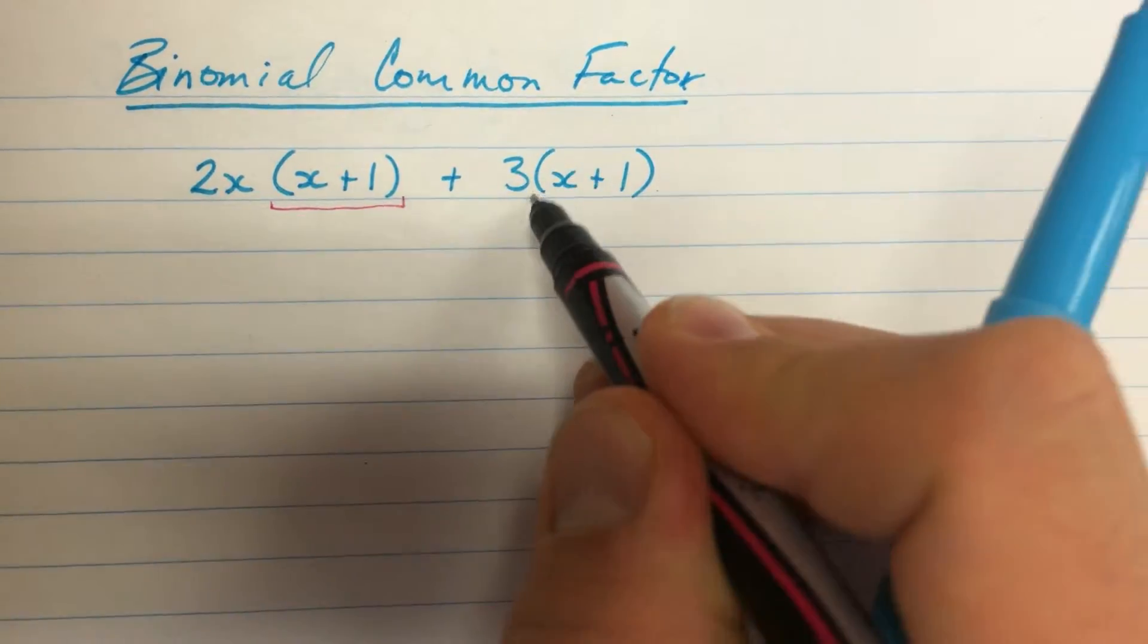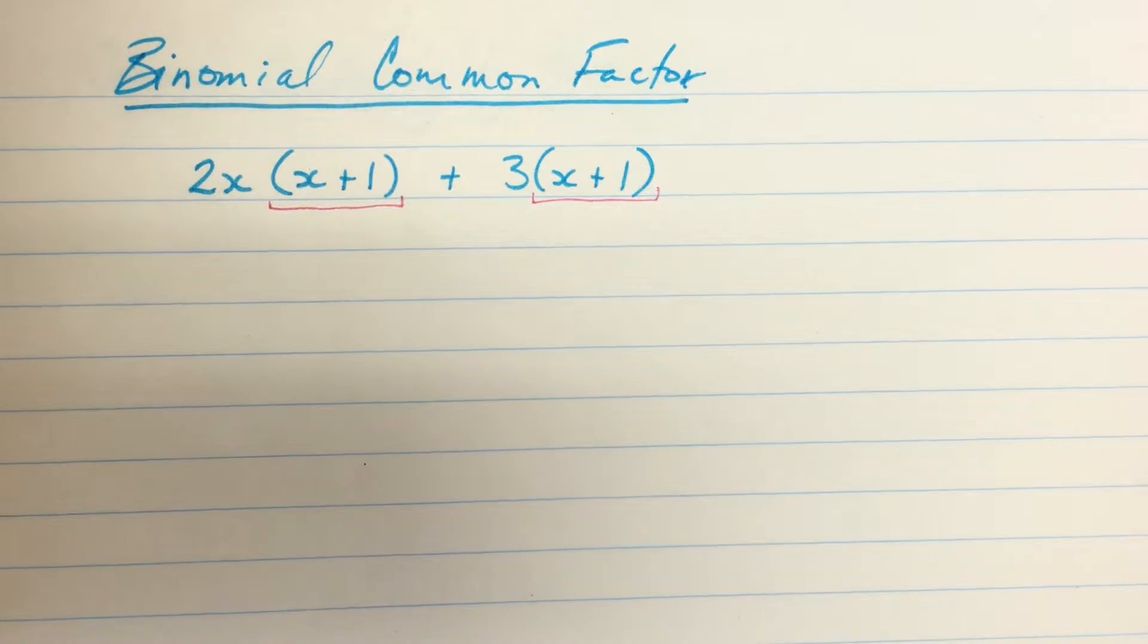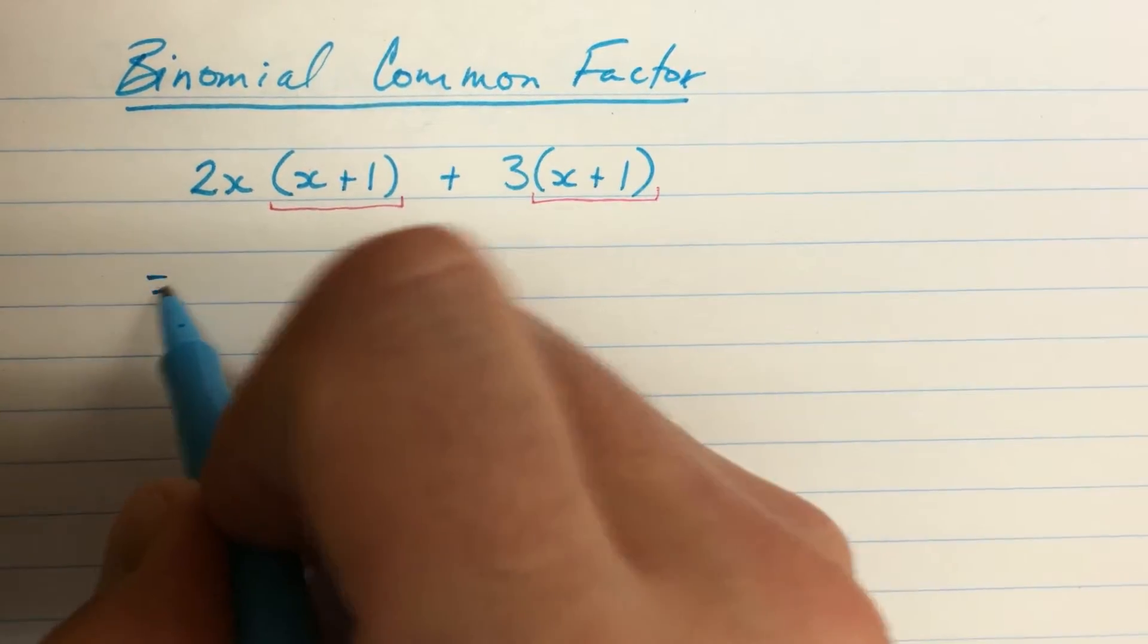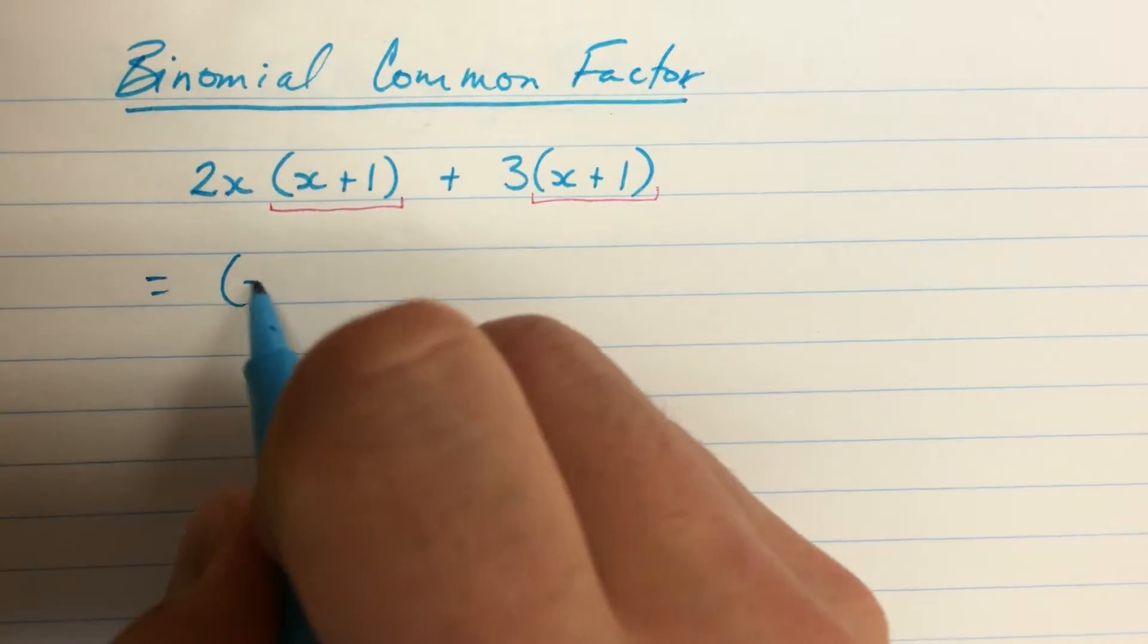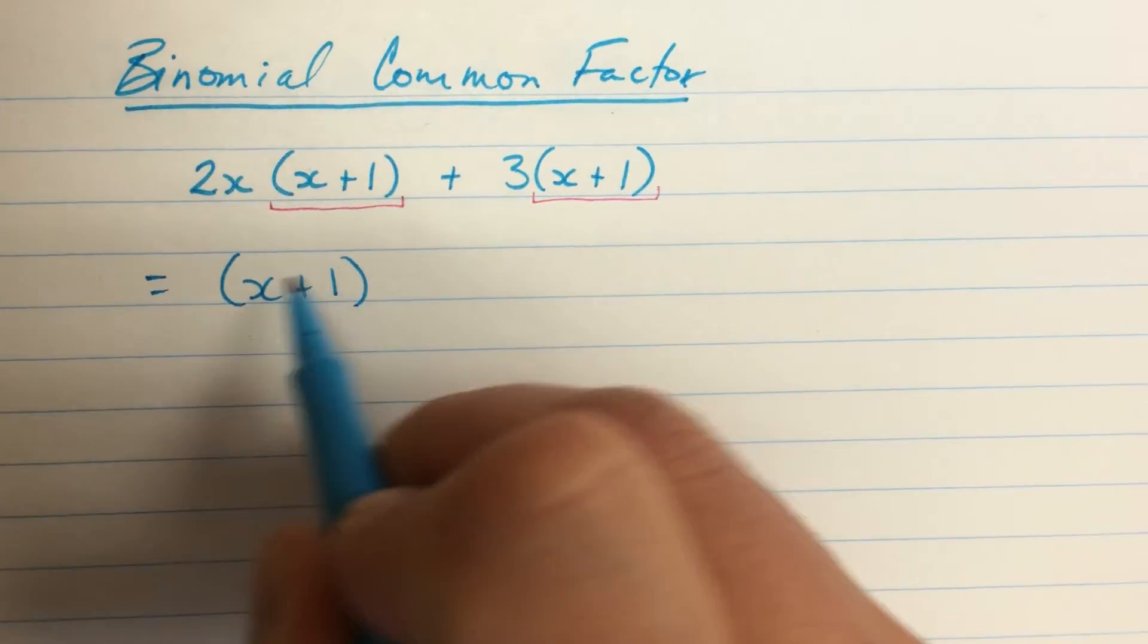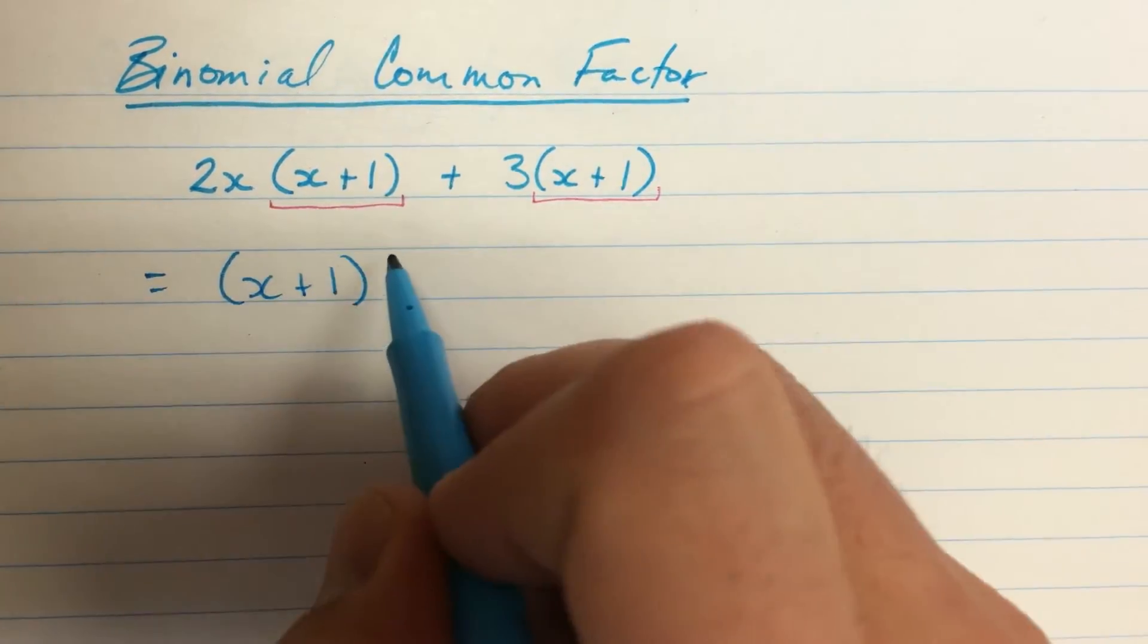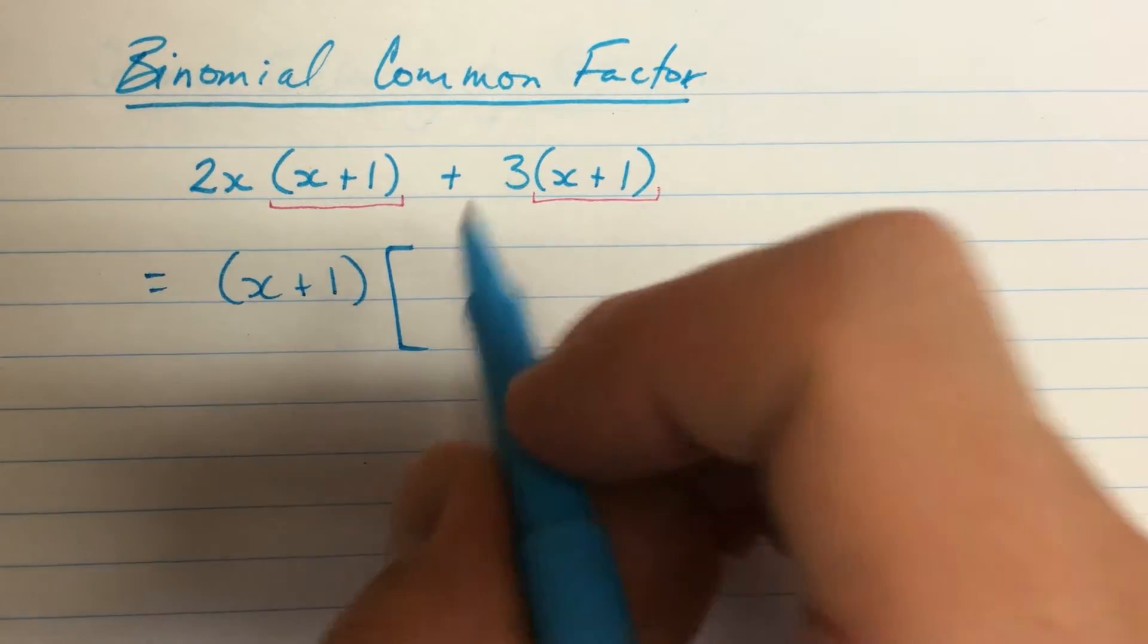And this one and this one both have a factor of x plus 1. And so I can do regular old common factoring to factor out that thing. So let me just write it here. x plus 1. I'm going to be dividing that out of each term. And so let me just write this out kind of long ways.